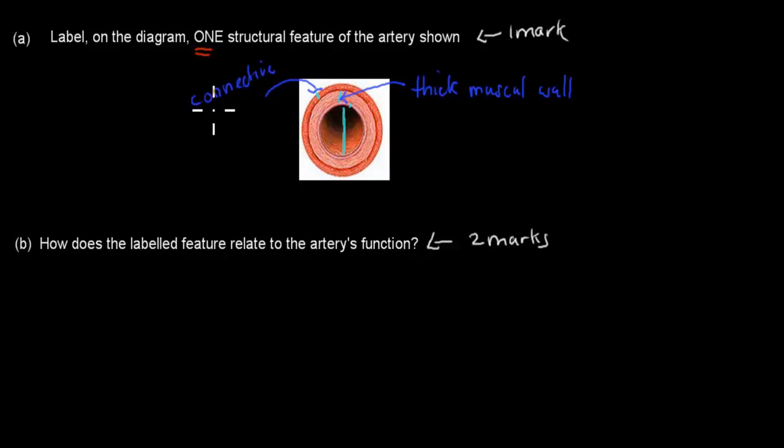That smallish part here, that was your elastic layer. Elastic layer. And the thing in the middle, we call that the lumen. That's where the blood passes through. So you would have only had to label one. I have labeled the thick muscular wall. And just labeling gets me that one mark. So it's worth one mark and I get one mark for that. That's one out of one.